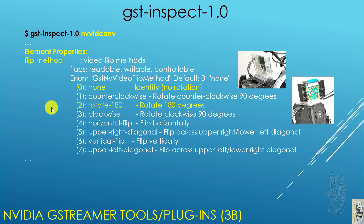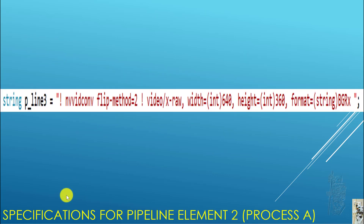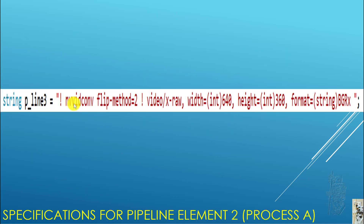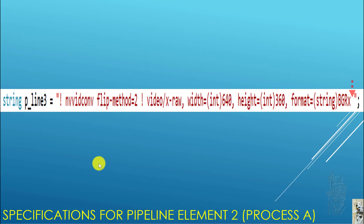For nvvidconv, the converter one element is now specified as: nvvidconv flip-method=2. Then the source capability: video/x-raw, 640 by 360 — scaled down to a quarter of the original pixels. Because the framerate is not specified, it keeps the same 120 frames per second received from before. The new format is BGRX. Again, notice the blank spaces in the string.